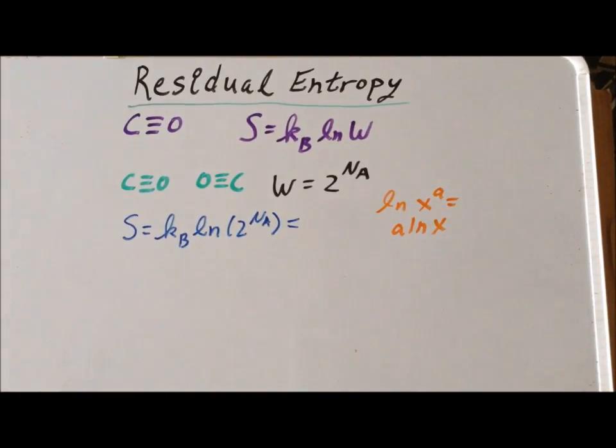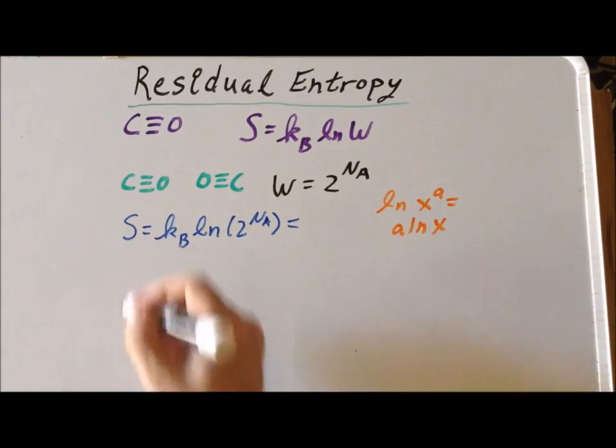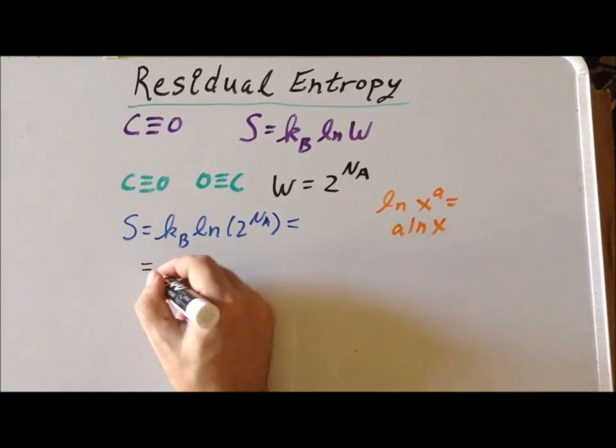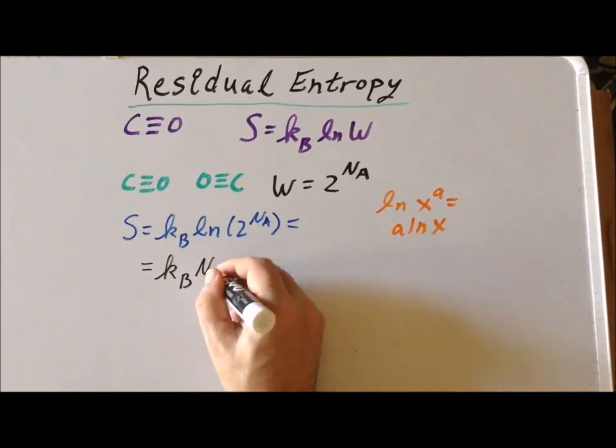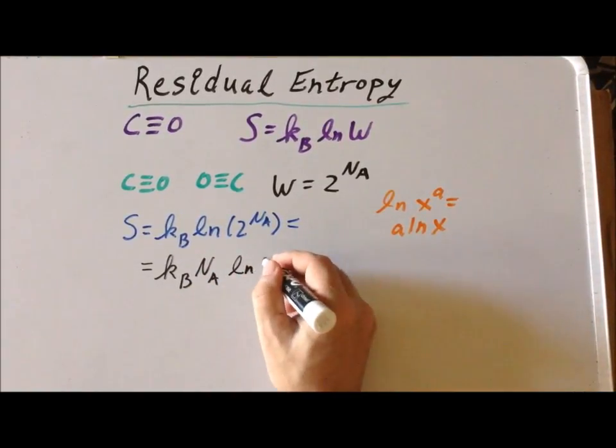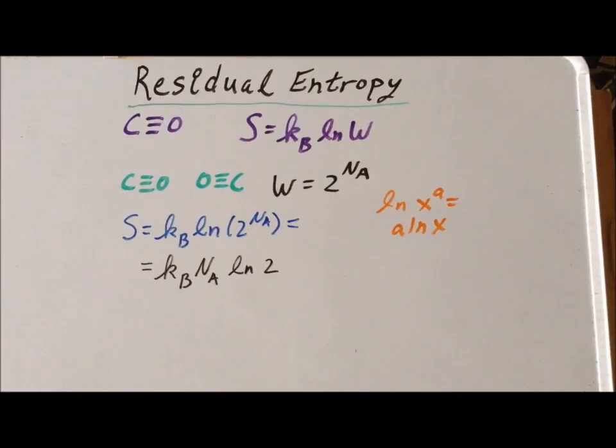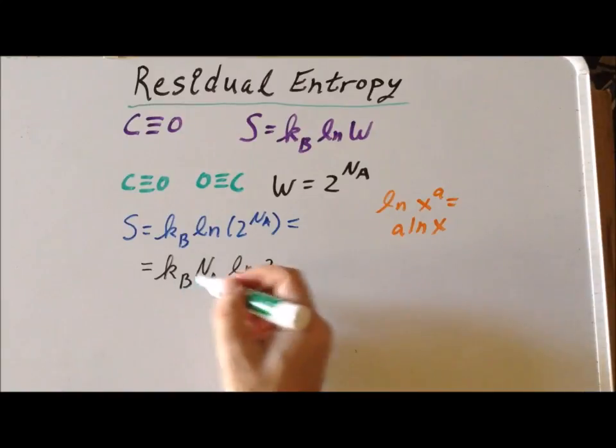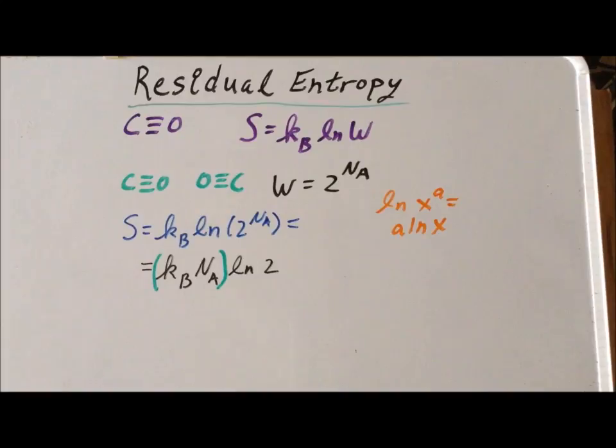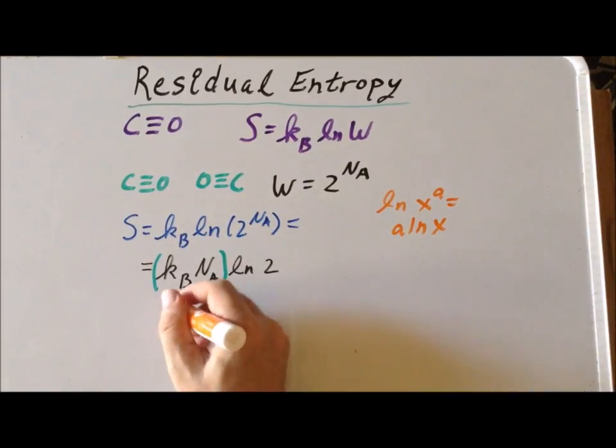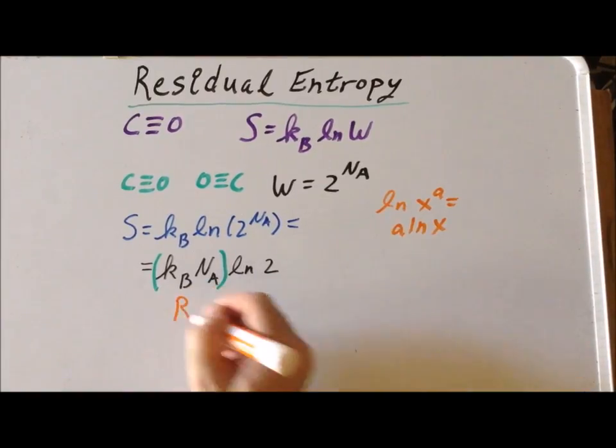If I do that in this case, I get that Boltzmann constant times Avogadro's number times the natural log of two. Now, this combination of constants is its own important constant. So if I multiply the Boltzmann constant times Avogadro's number, this is simply the gas constant R. So this reduces to R times the natural log of two.